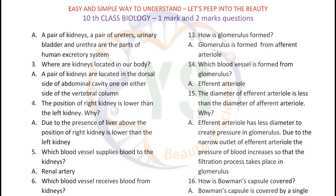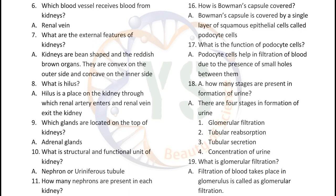How is glomerulus formed? Glomerulus is formed from the afferent arteriole. Which blood vessel is formed from glomerulus? Efferent arteriole. The diameter of the efferent arteriole is less than the diameter of the afferent arteriole. Why? The efferent arteriole has a lesser diameter to create pressure in the glomerulus. Due to the narrow outlet of the efferent arteriole, the pressure of blood increases so that the filtration process takes place in the glomerulus.